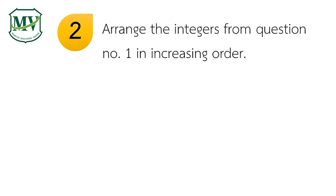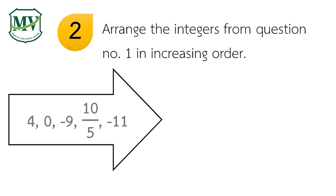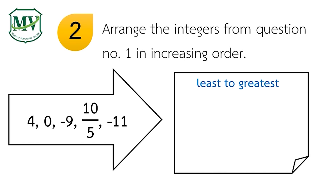Question number 2. Let's arrange the integers in increasing order. Remember, increasing order means arranging numbers from least to greatest. In this question, the answer is: negative 11, negative 9, 0, 10 fifths, and 4.